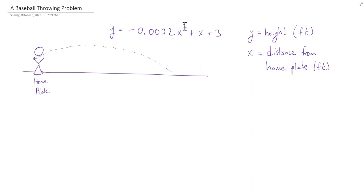There's a function which describes the parabola that this baseball is making. It's given here: y is equal to negative 0.0032 times x squared plus x plus 3. y is the height and x is the distance, right?